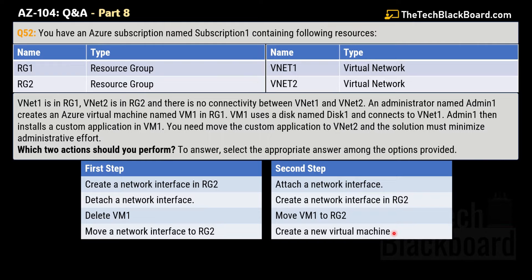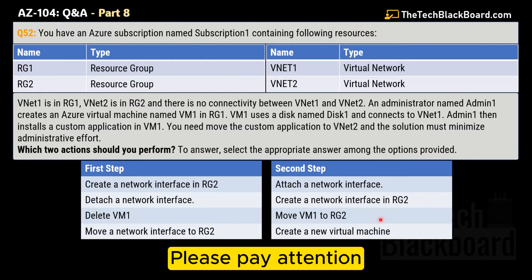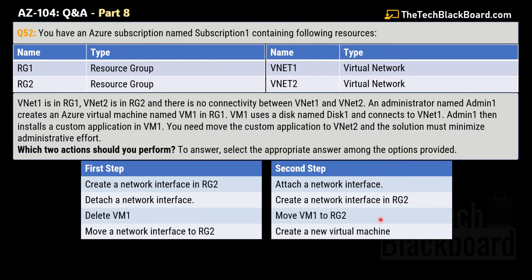This question looks intimidating at first glance, but let me dissect it. The main task is that Admin1 installed a custom application on VM1, which is on vNet1 in RG1. The admin needs to move this custom application to vNet2 in RG2. Since it's a custom application installed on a disk attached to VM1, the best approach is to unplug the disk from VM1 and attach it to another virtual machine. The catch is that both virtual machines are on different networks — VM1 is in vNet1 and the target is vNet2 — and you cannot move virtual machines between different networks.